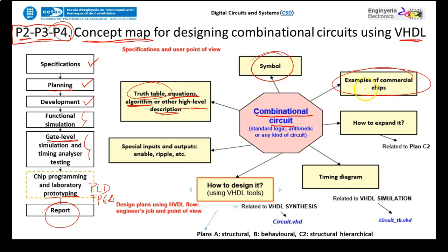Because we are designing standard circuits, we will find examples of commercial chips of the kind we have in mind to design. It is a great help to copy and adapt such commercial chips, or to fully understand their tables. There is also the idea of looking for special inputs like enable or ripple carry that control how the circuit runs — it may be enabled or disabled — and we will understand what the active logic value is: active high or active low.